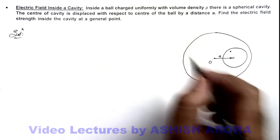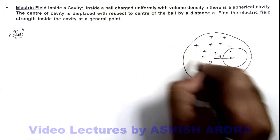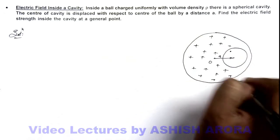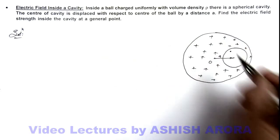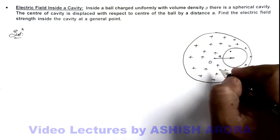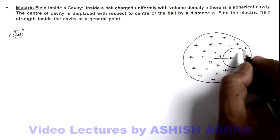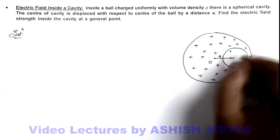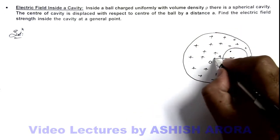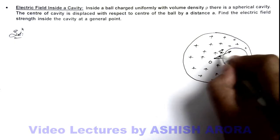The ball is uniformly charged with a positive charge density ρ coulombs per meter cube. Since there is a cavity, there is no charge within this region. To calculate the electric field at point P, we can assume that charge is present within this cavity region also — then it becomes a uniformly charged sphere. The point P is located at position vector x from the ball center.